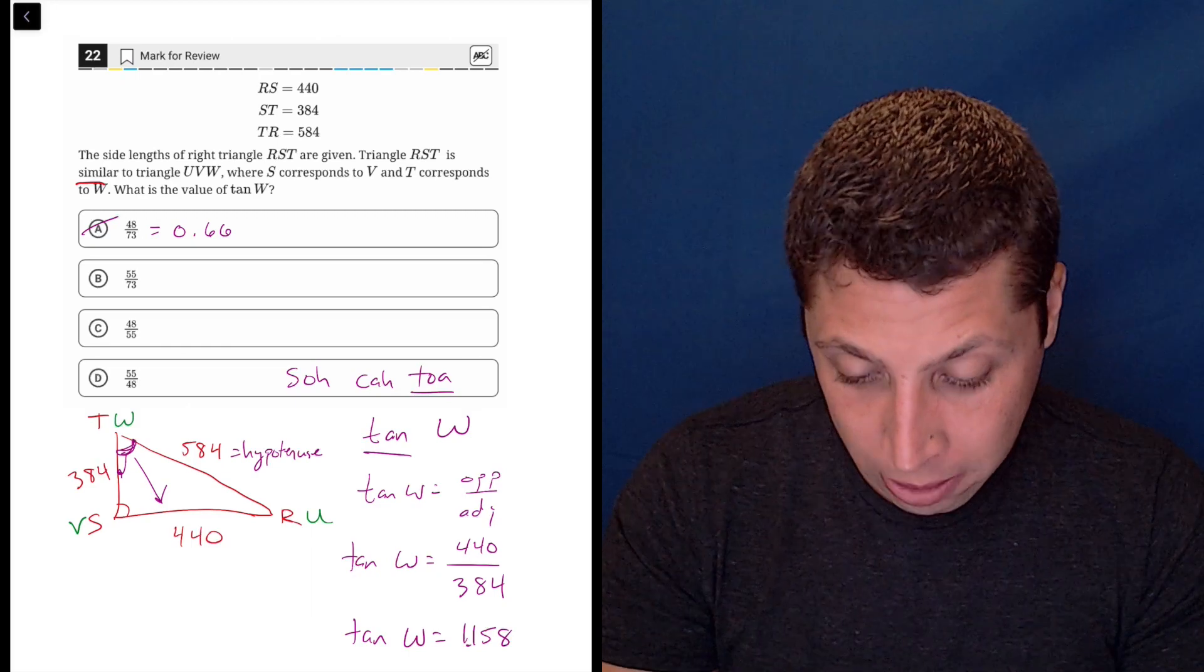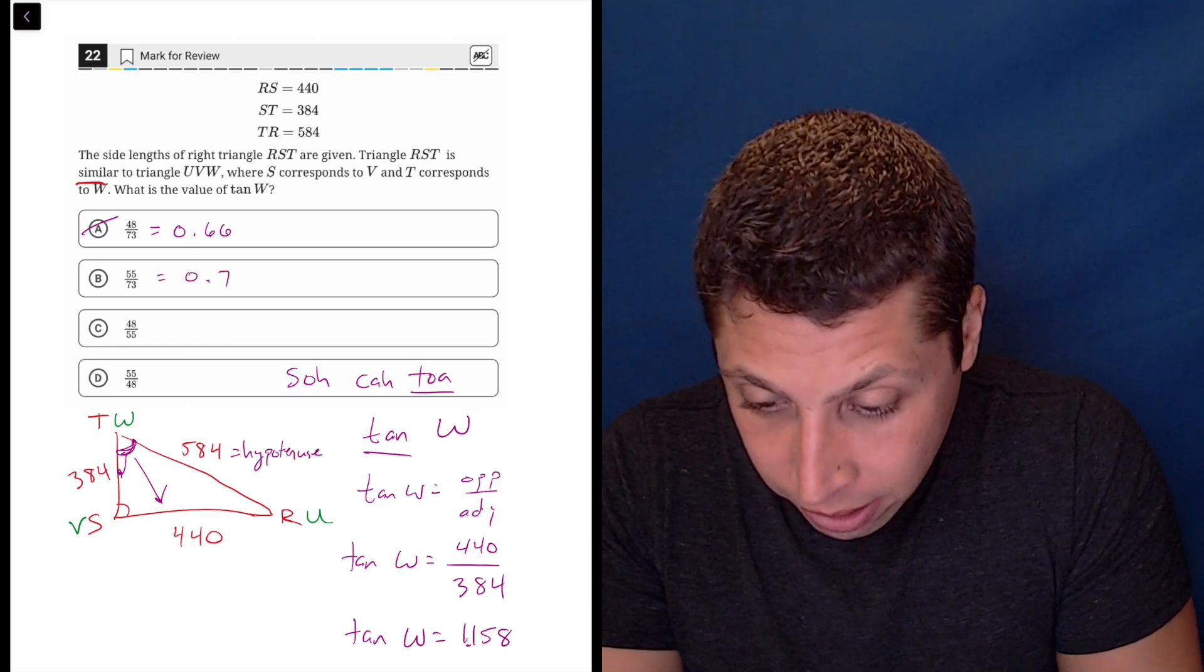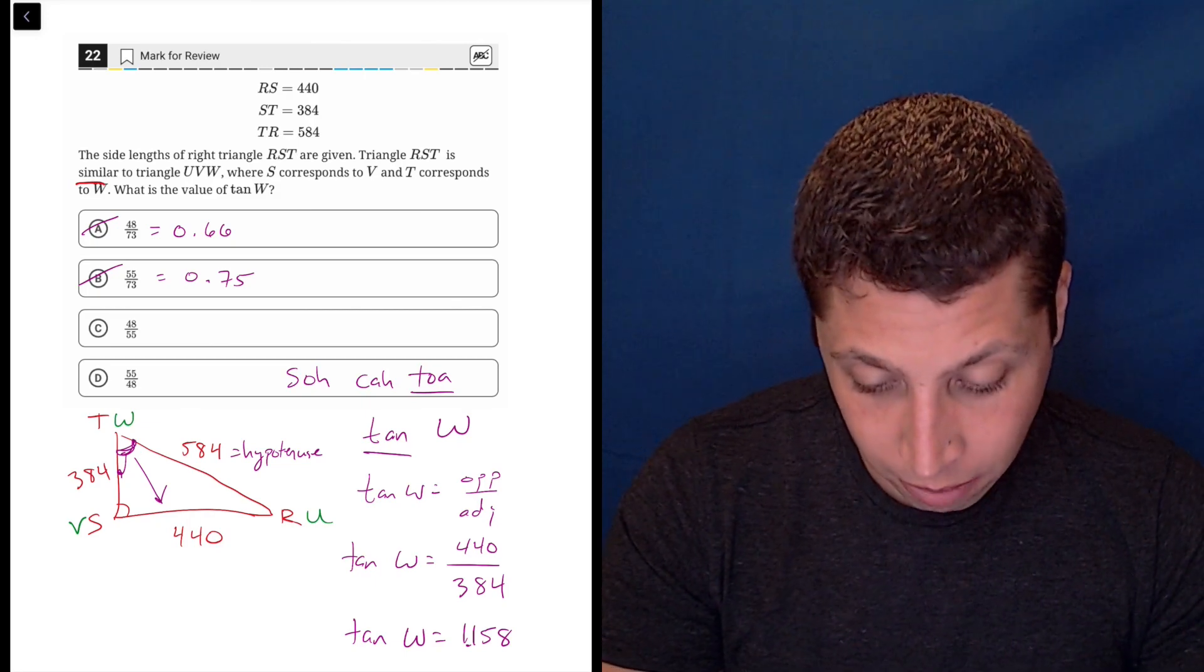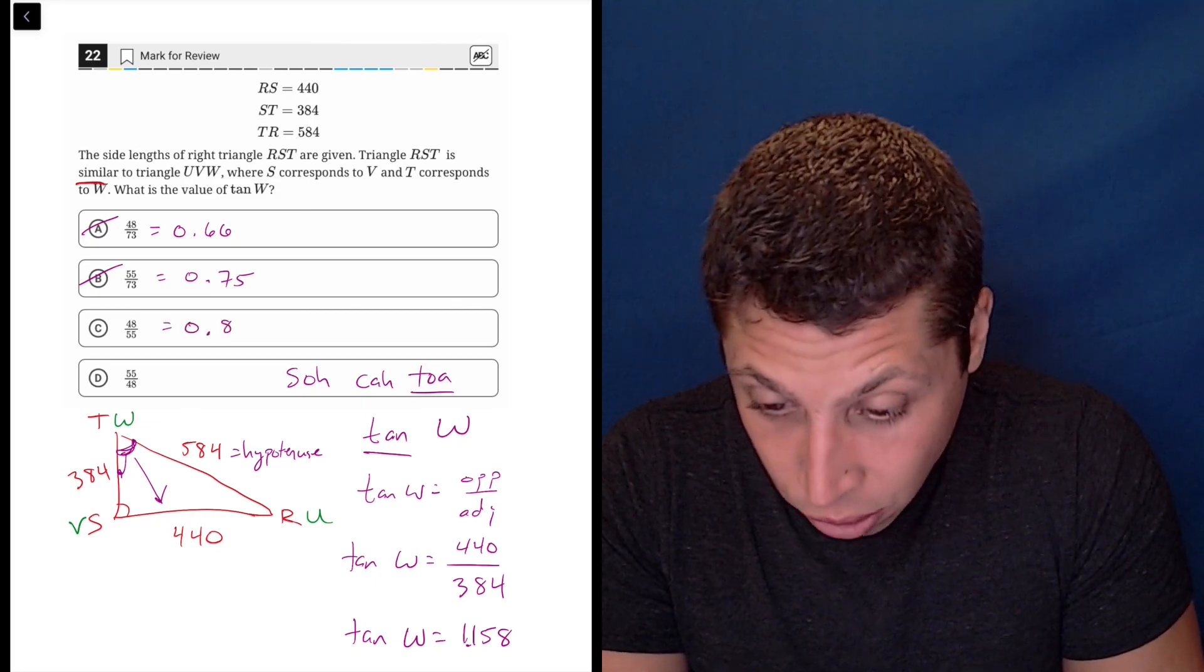Same thing with choice B, but we'll do it anyway. 55 divided by 73 is 0.75, that's no good. Choice C, 48 divided by 55, this is also going to be less than 1, so that's no good.